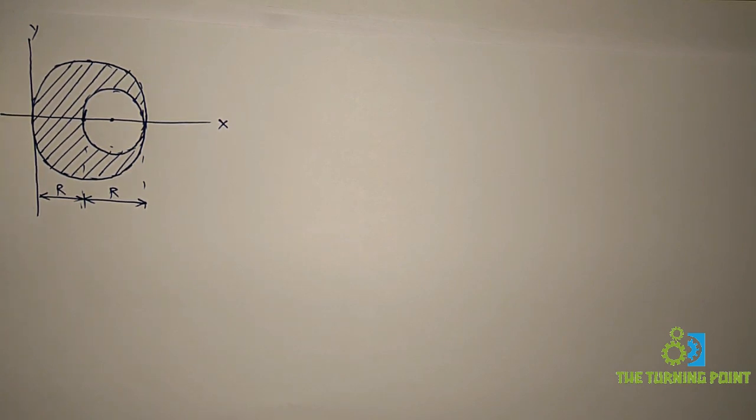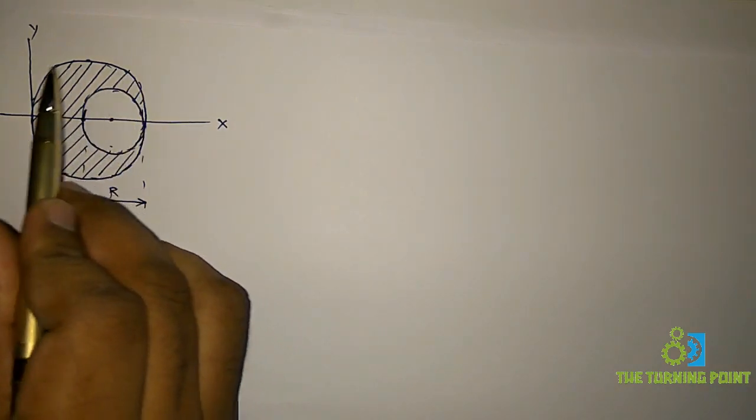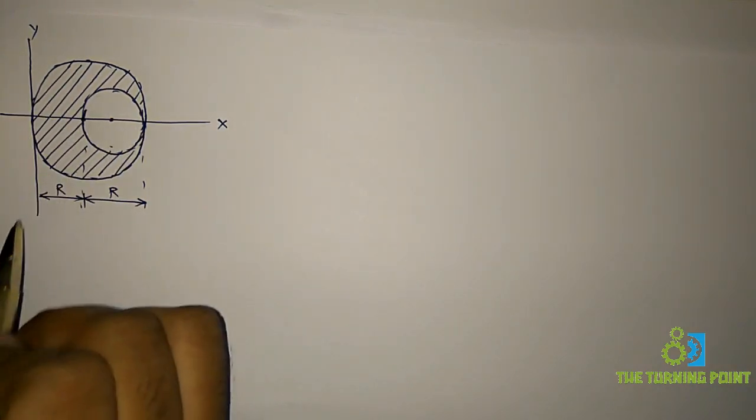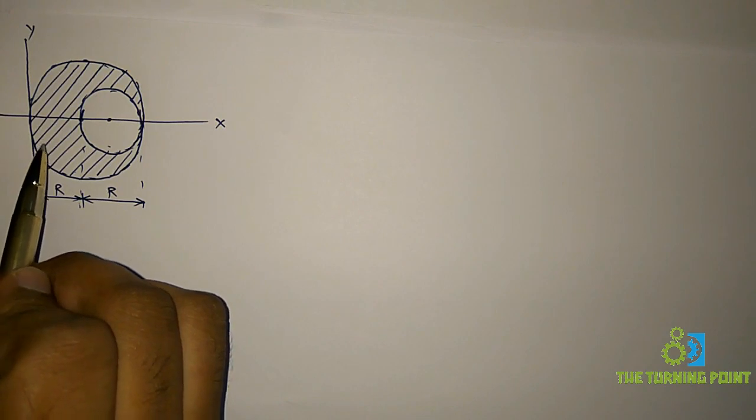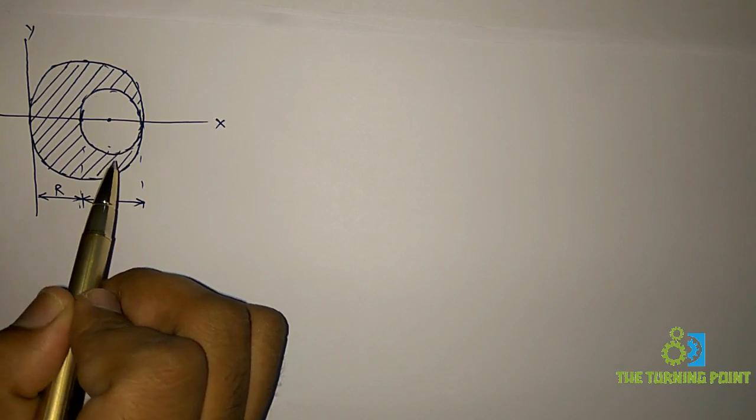Here we have to find the center of this shaded area. So if you want to get this shaded area, you have to subtract this circle from the big circle. So here if you observe, the radius of big circle is R whereas the diameter of small circle is R.